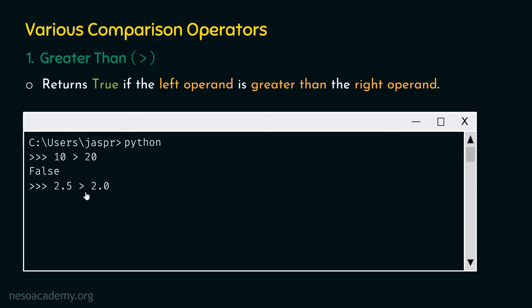Now let's type 2.5 > 2.0. It is true that 2.5 is greater than 2.0, so we will get true as a result. I hope the idea of greater than is completely clear.